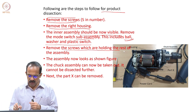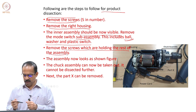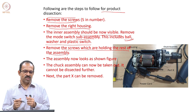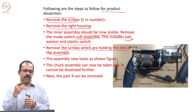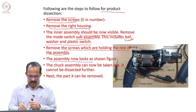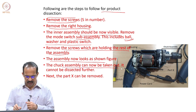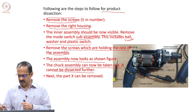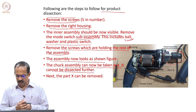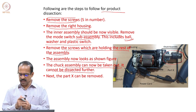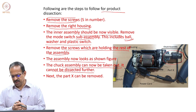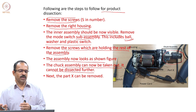Then remove the screws holding the rest of the assembly. Once you remove them, you will see a few more screws. Remove those screws and again write down the procedure — which one you removed first, number them, and keep them separately. The assembly will then look like the next stage. The chuck assembly can be taken out, but you do not need to further dissect the chuck assembly at this stage, since you know its purpose and how it works.